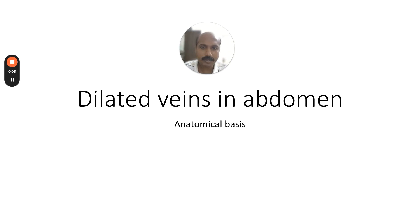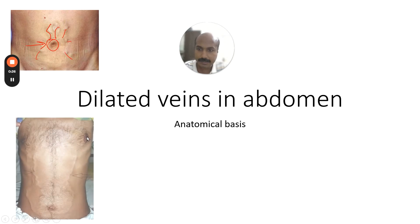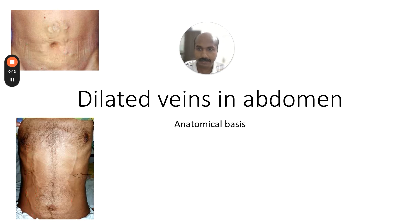In this video we will discuss dilated veins in the abdomen and the anatomical basis to understand the differentials. In the first case, large tortuous veins are seen around the umbilicus. In the second case, dilated veins are more lateral, not around the umbilicus — appearing to connect two veins on the lateral side. These are two typical cases we will examine.